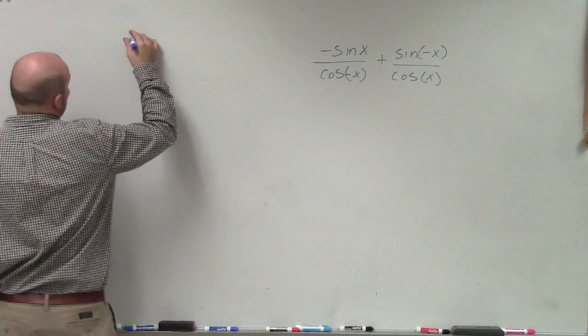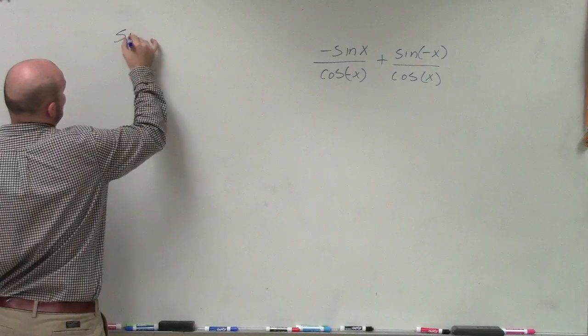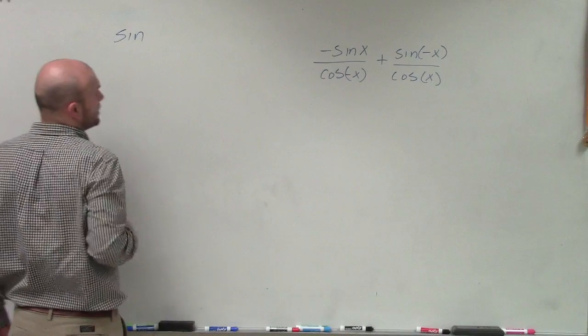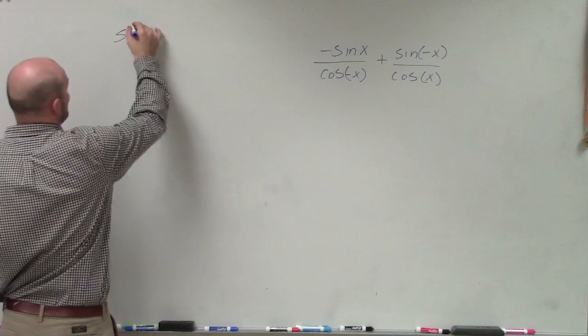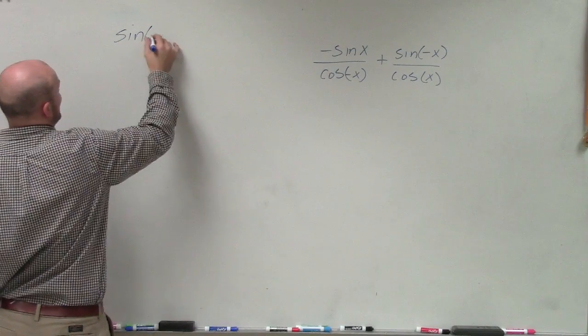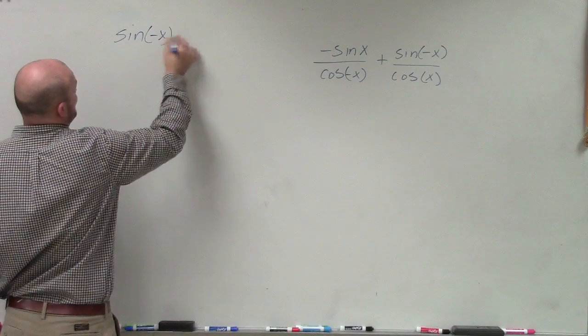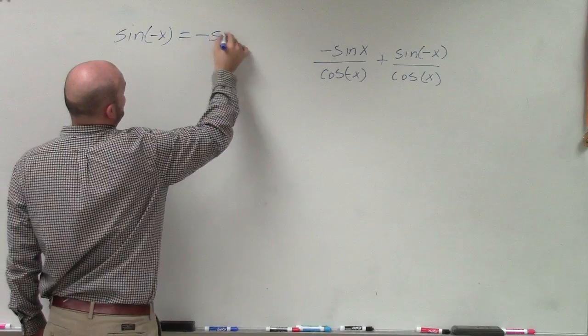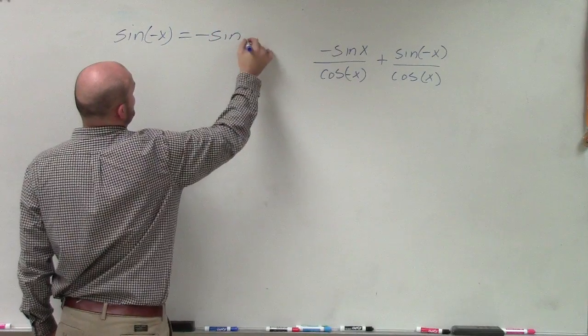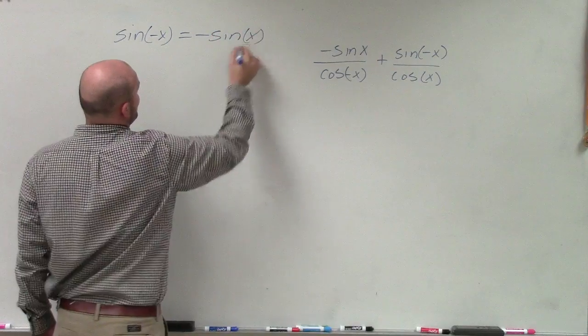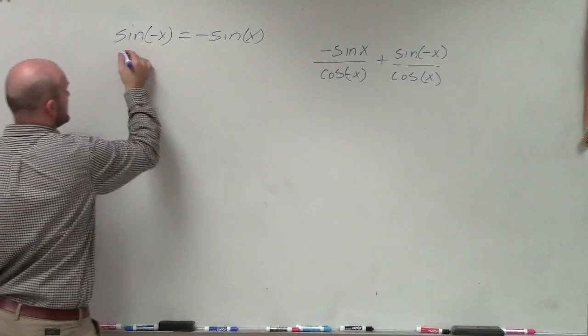Remember, our sine function is what we call odd. So therefore, if I take the sine of negative x, I'm going to factor out the negative — that's equivalent to the negative sine of x.